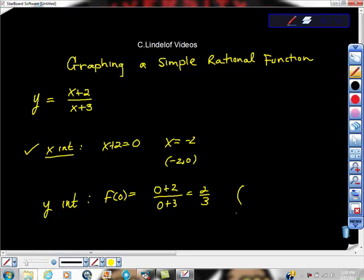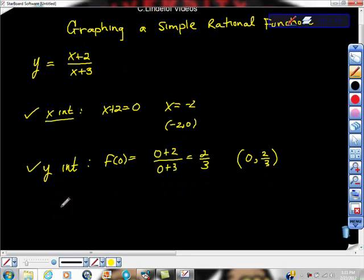And that gives us what point? Yes? 0, 2 thirds. So we have that. Now what? Get four things, we kind of have this simple graph. Dalton?